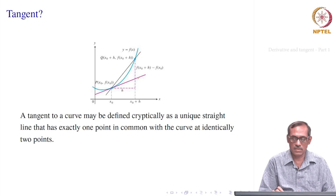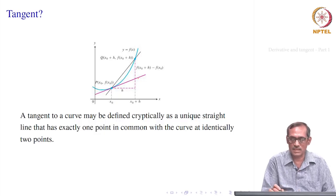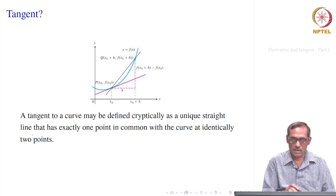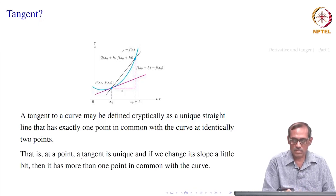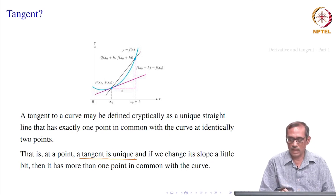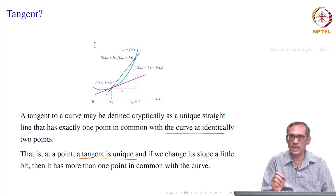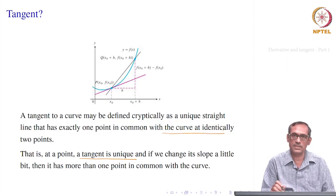There are some critical cases to consider. We may think of a tangent to a curve as a line that has exactly one point in common with the curve at identically two points. What does 'identically two points' mean? If you take the tangent — a unique straight line — and change its slope a little bit, then it has more than one point in common with the curve.